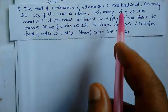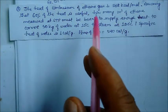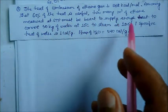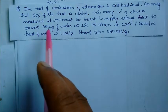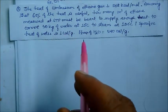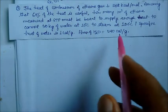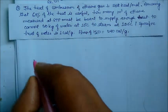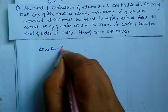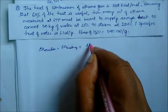Combustion of ethane releases 368 kilocalorie per mole. Assuming that 60% of heat is useful, how many liters of ethane measured at STP must be burned to supply enough heat to convert 50 kg of water at 10 degree centigrade to steam at 100 degree centigrade? Specific heat of water is 1 calorie per gram and latent heat of vaporization is 540 calorie per gram. Delta H total equals delta H heating plus delta H vaporization.